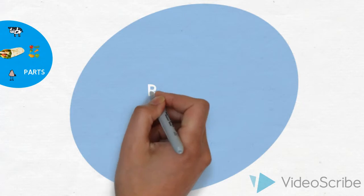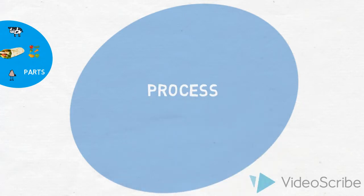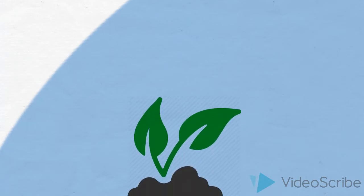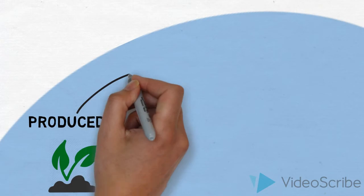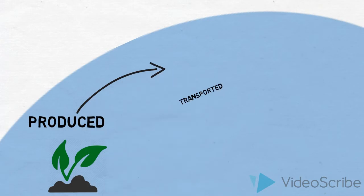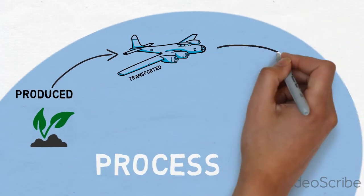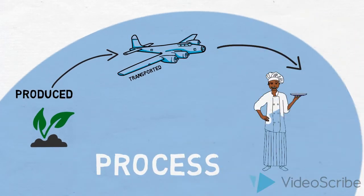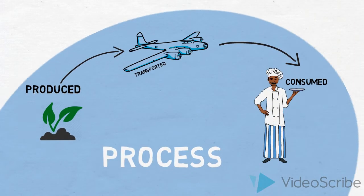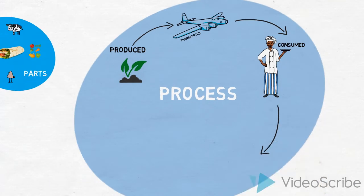Now, let us look at the process that each one of these parts goes through. How are the ingredients produced? How are they transported? How are they consumed? And what happens with the waste?